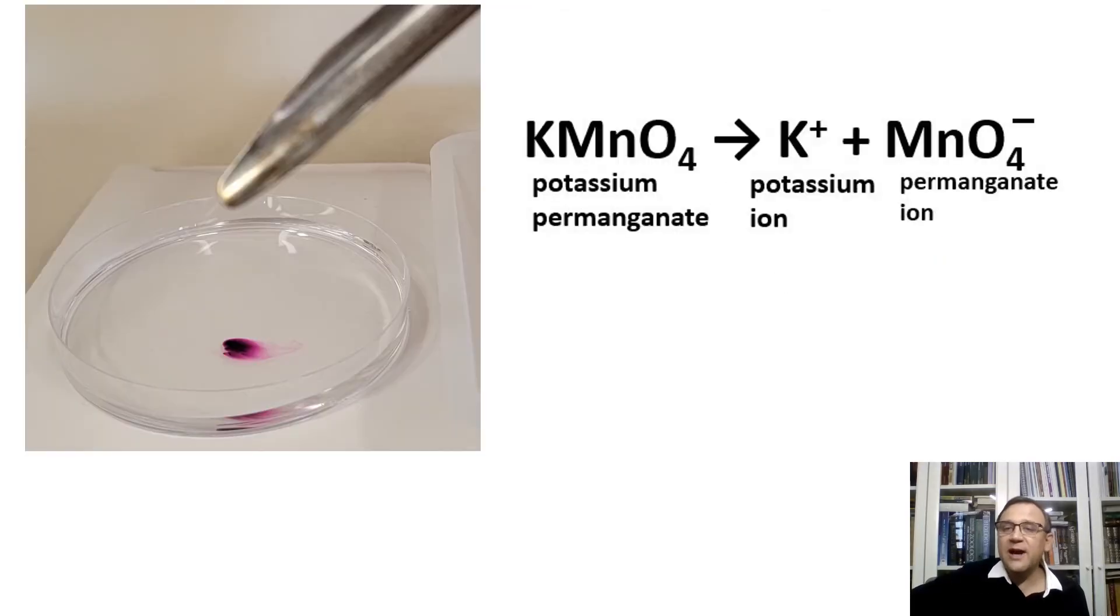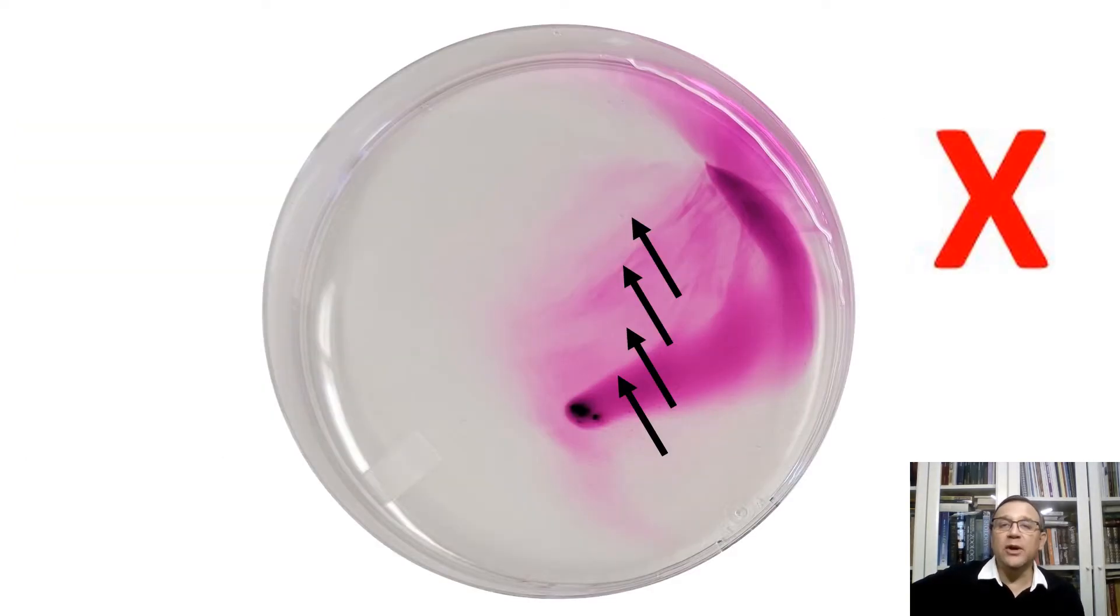Using a spatula, we carefully place some crystals of potassium permanganate at the center of the petri dish. Try to avoid stirring or disturbing the water as any movement can cause disruption.